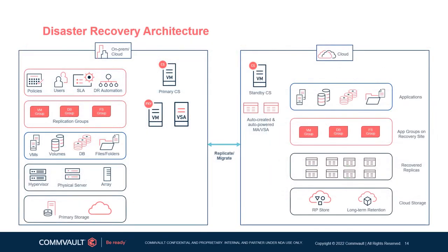The Commvault Disaster Recovery solution employs hypervisor and Commvault components on both the primary and secondary sites. The deployment can be standalone or co-located within the primary site's infrastructure. Configure Commvault Disaster Recovery so that the Commvault deployment remains accessible if the primary site is inaccessible. This is how the DR architecture appears.